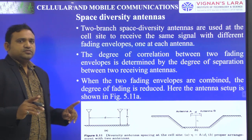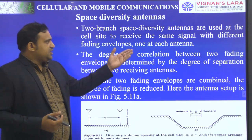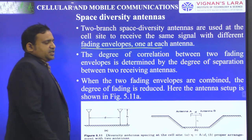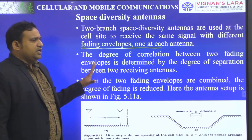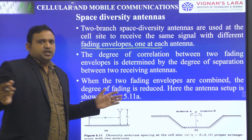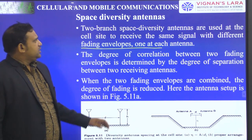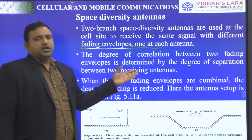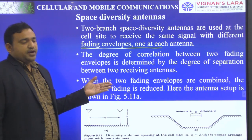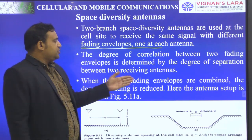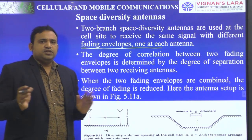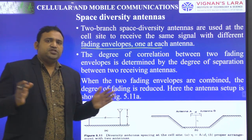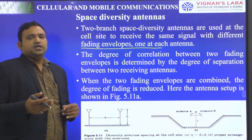So two antennas are used, which are designed to receive the same signal with different fading envelopes. This is important. The two antennas are placed with a distance D, and are intended to receive the same signal with different fading envelopes. The degree of correlation between two fading envelopes is determined by the degree of separation between the two receiving antennas. The distance between these two antennas is related to the respective fading envelopes.